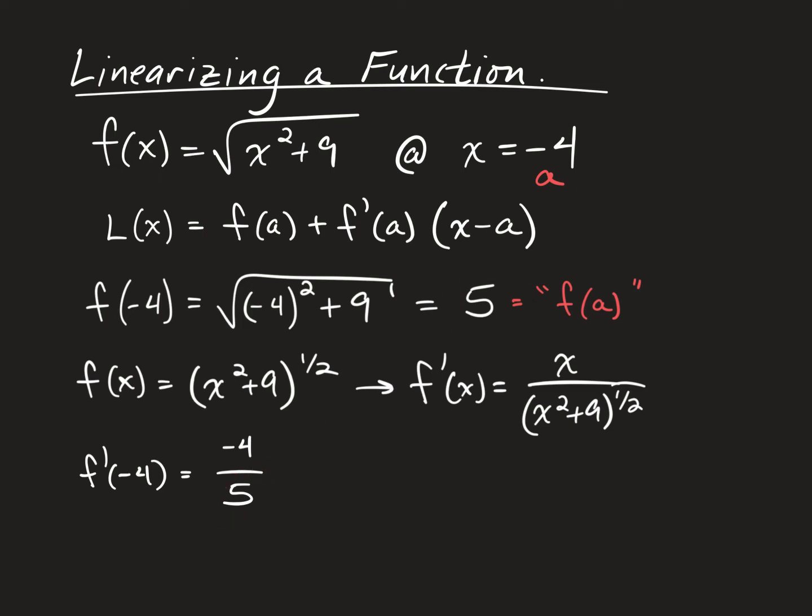From there, we can just start substituting everything we need into the linearization equation. So, L of x equals, now let's see, f of a, we figured out back here, is 5. So, 5. Then, I'm not going to write down plus because f prime of a, which is this here, is in fact negative. So, I'm going to write it as minus 4 fifths times x. And similarly, I'm not going to write a minus here because when I substitute negative 4 in here, it'll be subtracting a negative, which is just plus 4. So, here is the linearization of this function centered at x equals negative 4. And just to be very complete about this, the linearization in slope-intercept form can be rewritten as negative 4 over 5x plus 9 over 5.